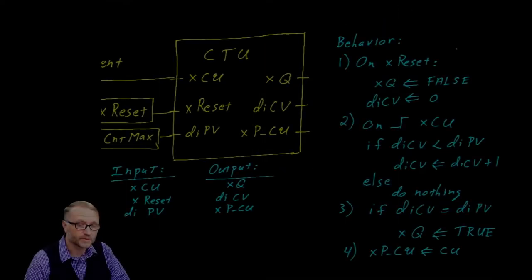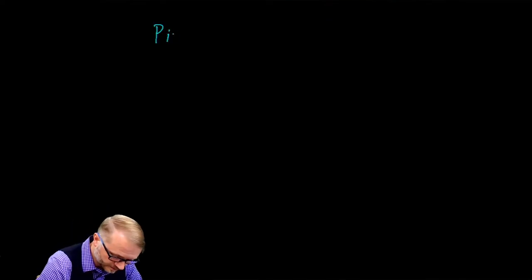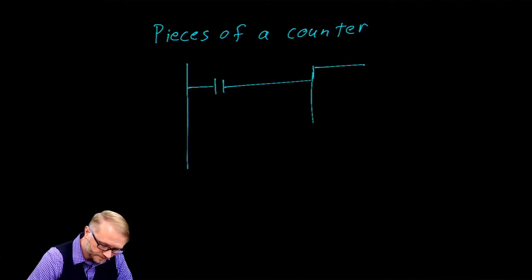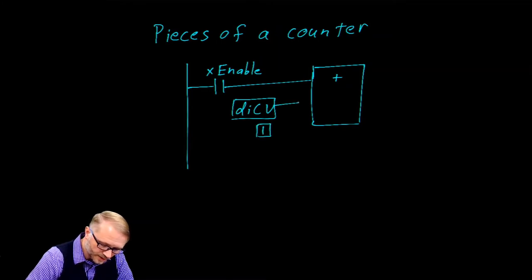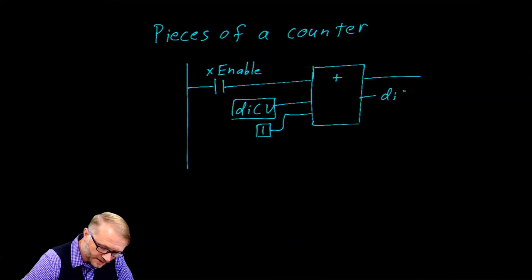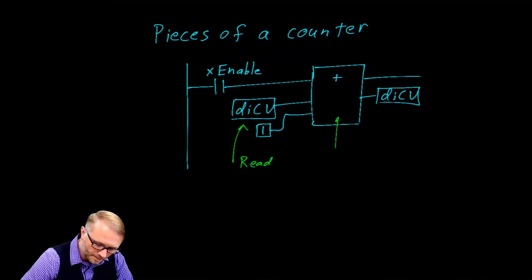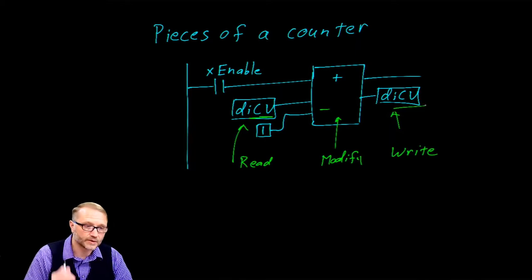Now that we've described the inputs, outputs, and behavior of our counter, let's open the hood and see what is underneath. One of the first things you'll notice is that there is an addition. We'll let this be our enable, this is the current value, and we have the number one. Every time this enable is true, we are going to increment the current value by one. You could think of this as a read, modify, and write operation. We read the current value, add one to it, and then write current value back to its original memory location.